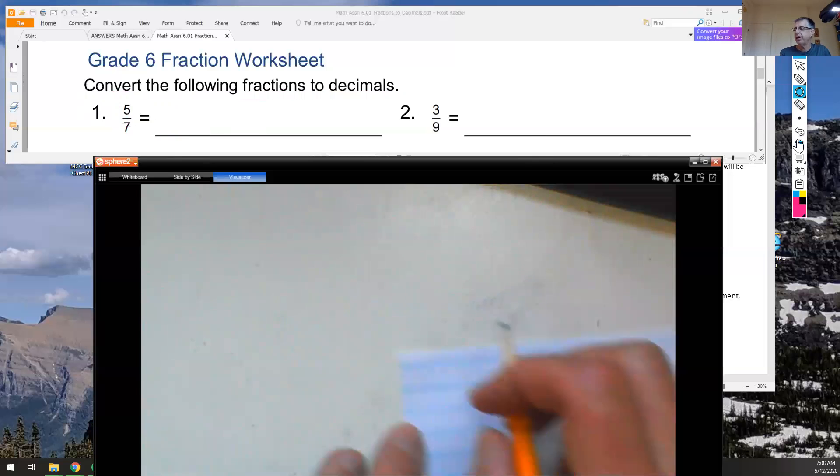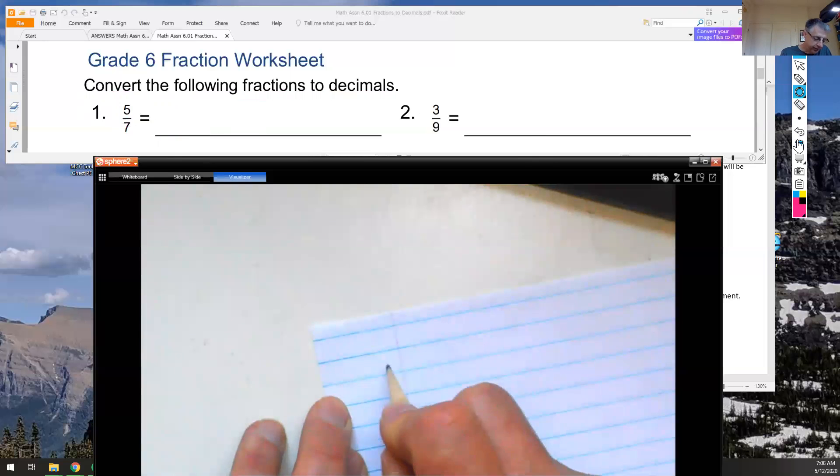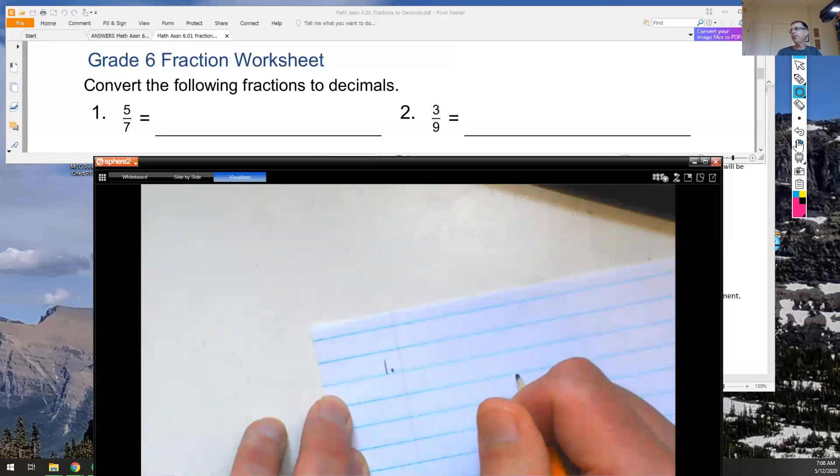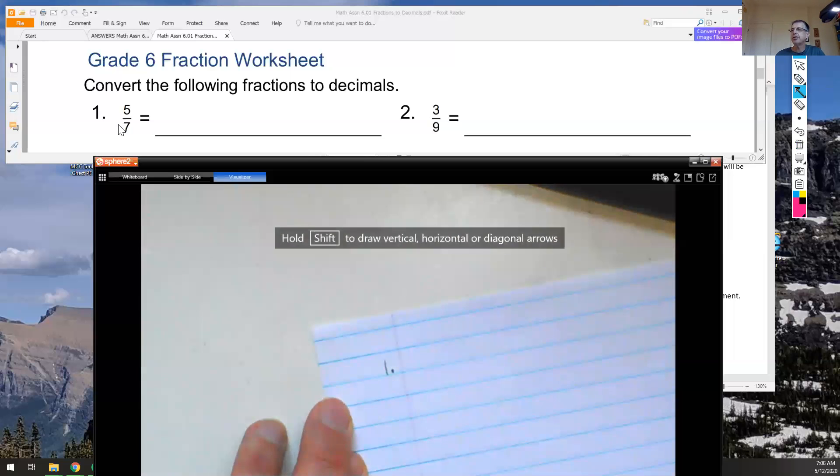Let's say, for example, on your paper, I'd like you to number your papers so you have the answers. It makes it easier to check your work. The very first one is 5 sevenths is equal to, so I'm going to go ahead and on my paper, I'm going to be writing 5 over 7 is equal to.